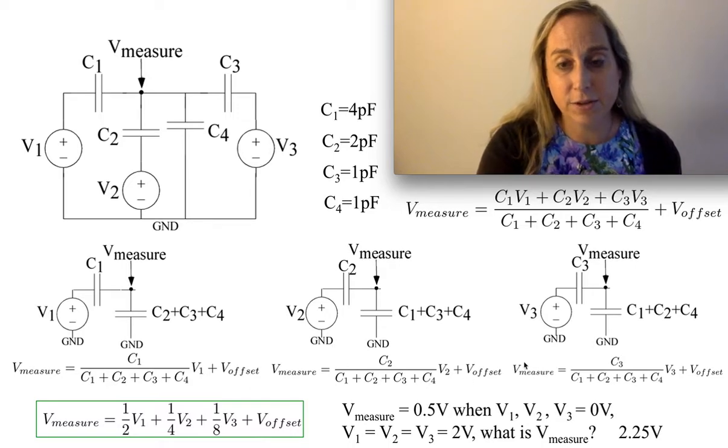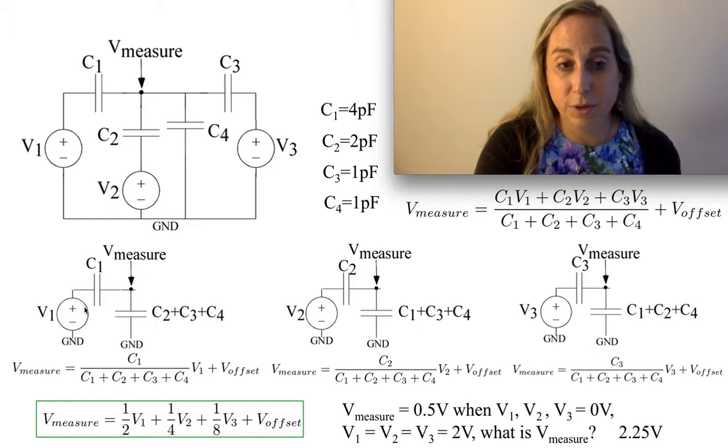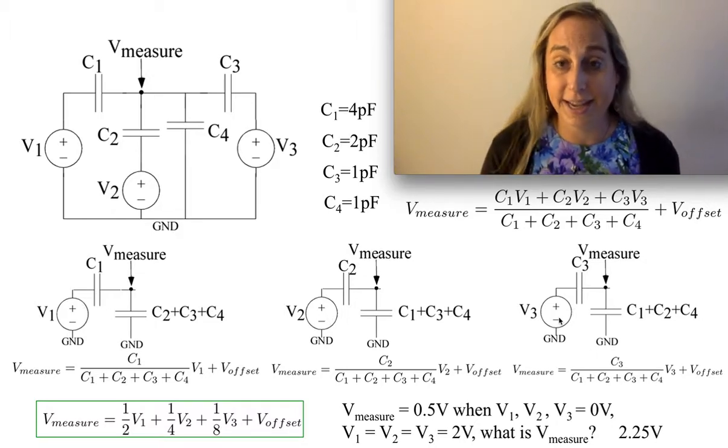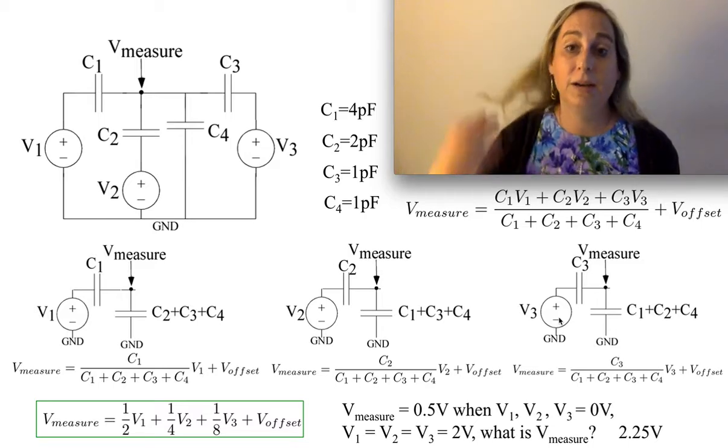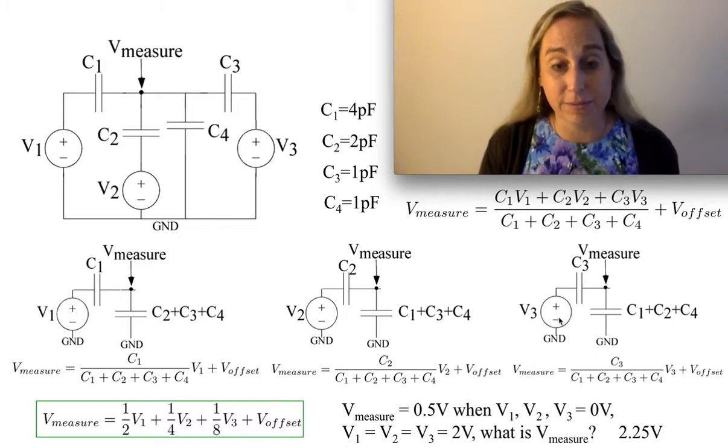Interestingly enough, the offset, you can argue, is the same thing because if you look at it closely, if I turn V1 to 0 and V2 to 0 in this case and V3 to 0 in this case, I have the same circuit, which is the same sort of thing but one very single point that's true for all of them.